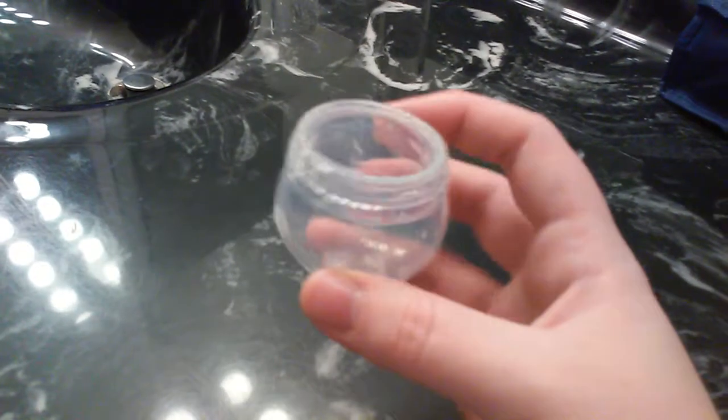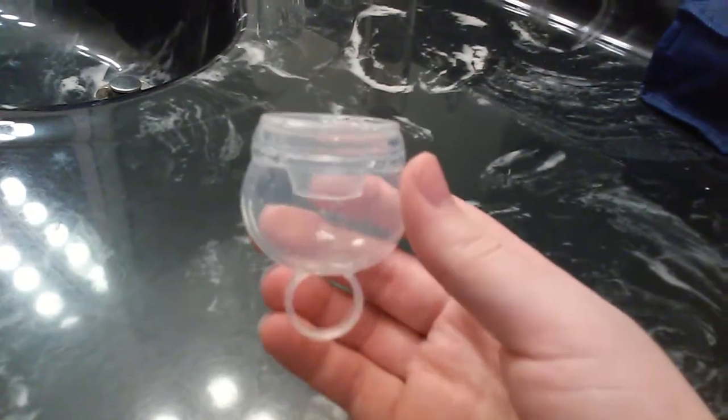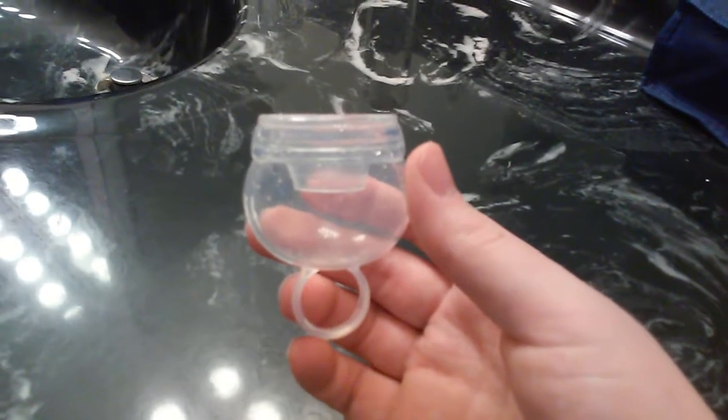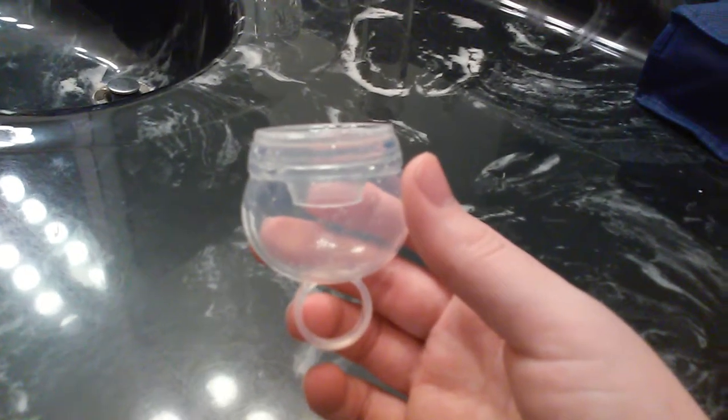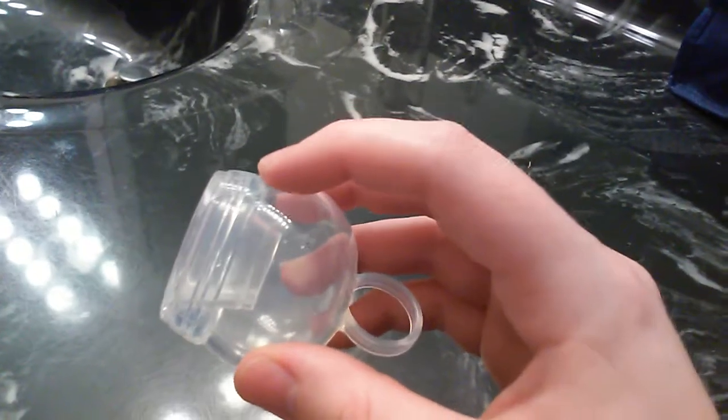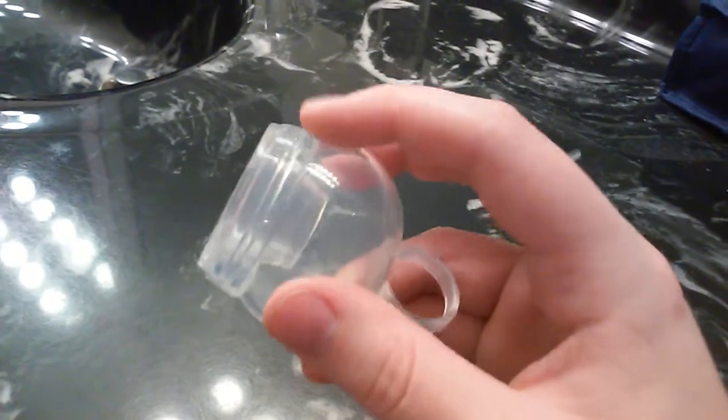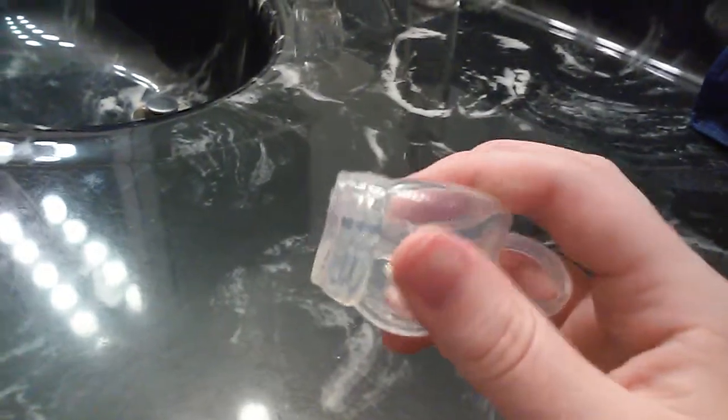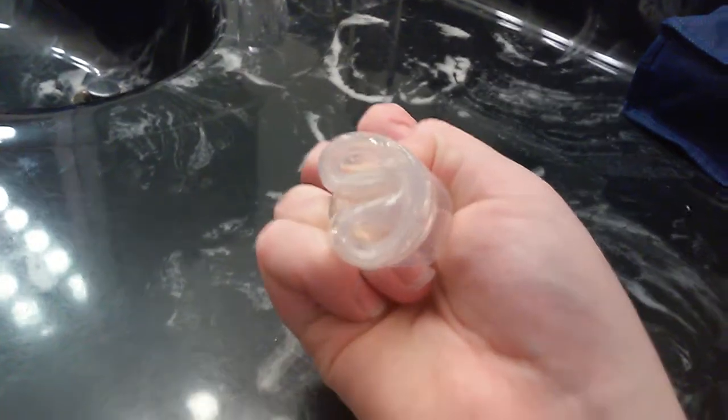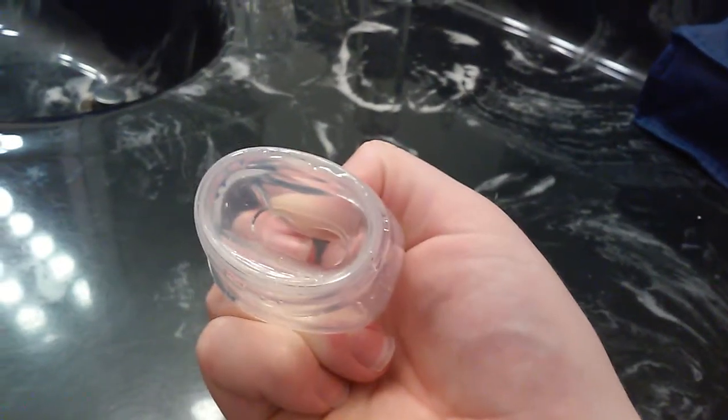This cup also has a bulbous design which is different than most menstrual cups. This cup also has a unique feature to help you fold. While you may not be able to see this on camera, there are little bumps right around here on the rim. According to the instructions that's the proper place to fold the cup down. So you fold it from that rim, insert it, and release.